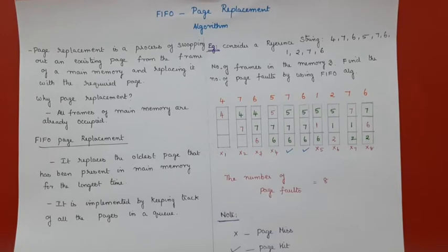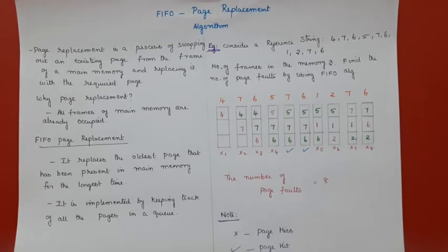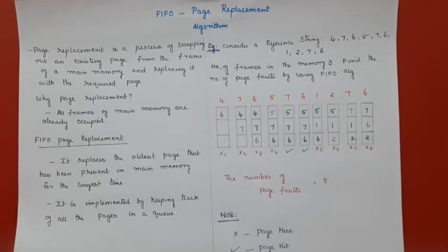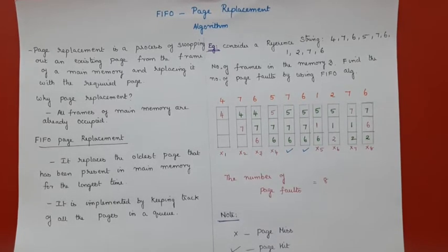That's why we need the page replacement algorithm. Page replacement is the process of swapping out an existing page from a frame of main memory and replacing it with the required page. We need this when all the frames in main memory are already occupied and there are no more free frames.